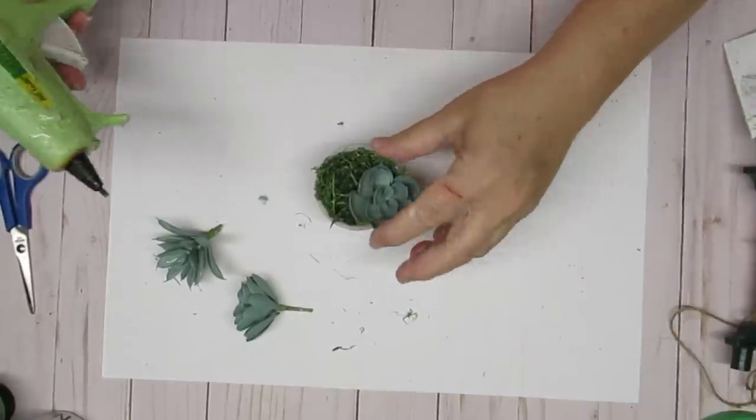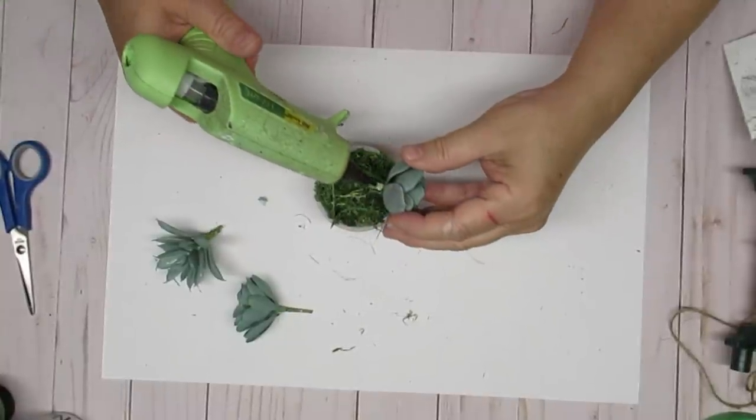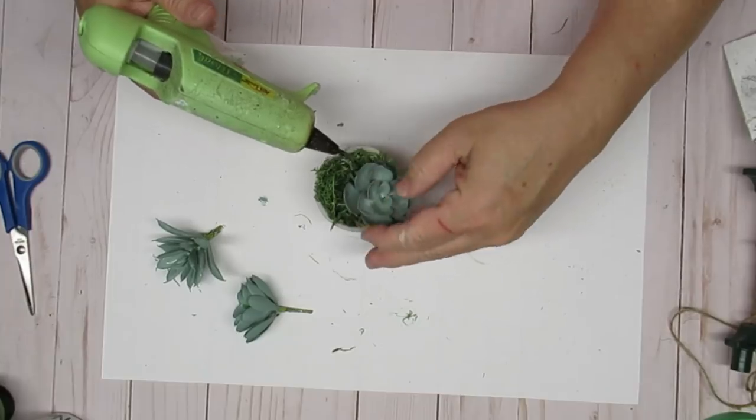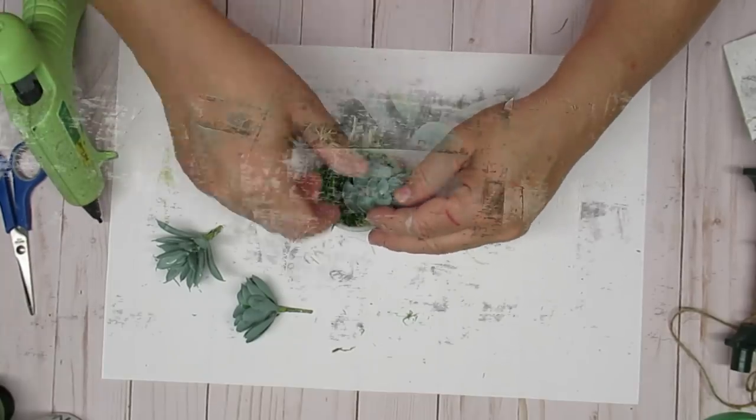Now I'm just going to take some hot glue and glue these right down into the moss and into the styrofoam. I think this little mini succulent garden turned out super cute.